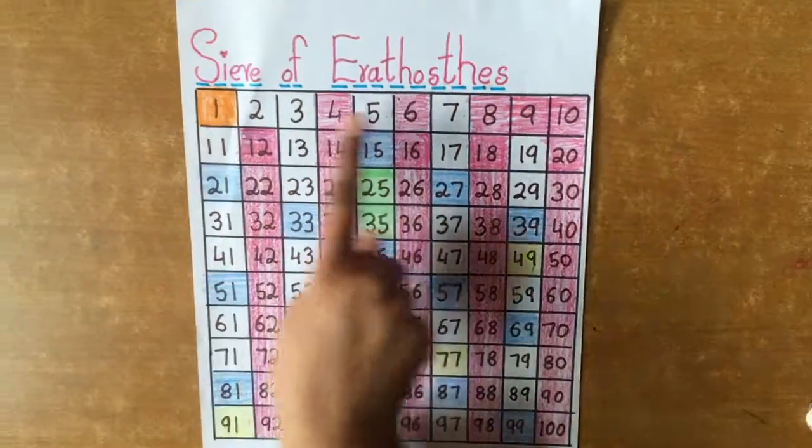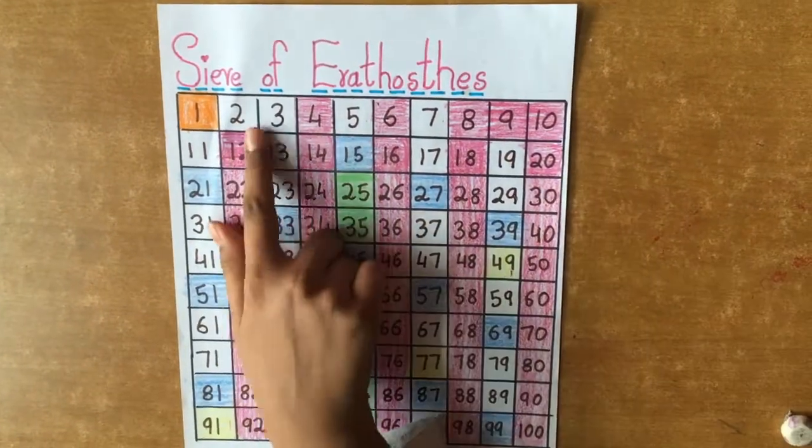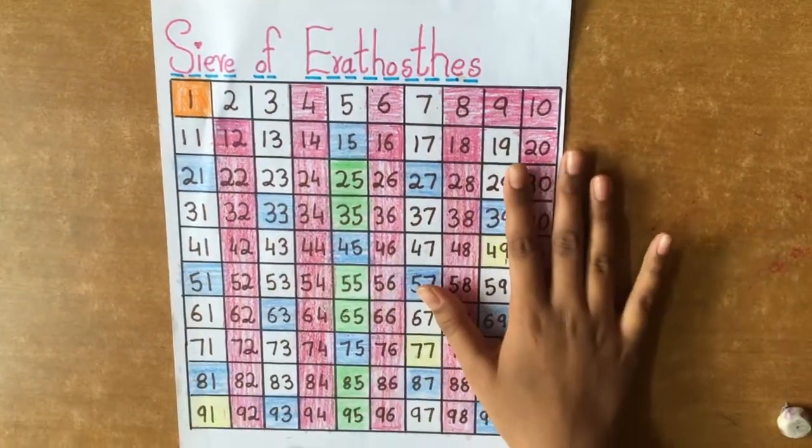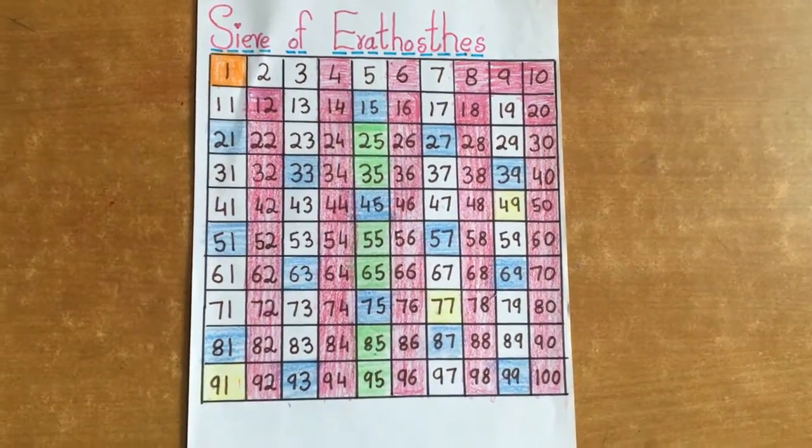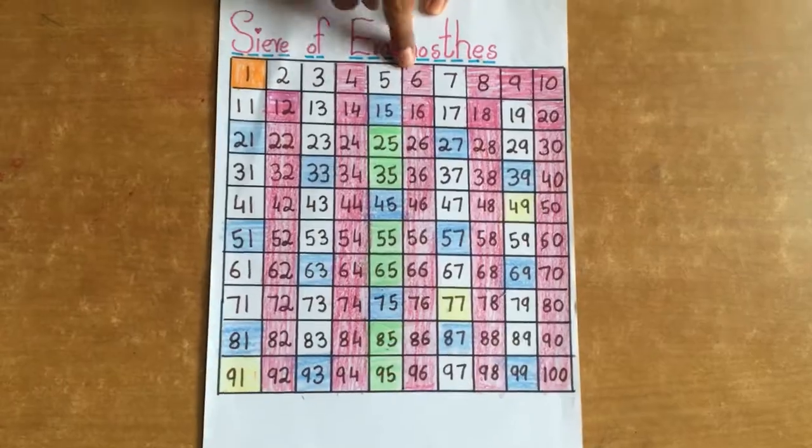Now let's write all the prime numbers. Prime numbers are the ones which are not marked. Let's write them all in a sheet of paper. I wrote all the numbers which are not colored.